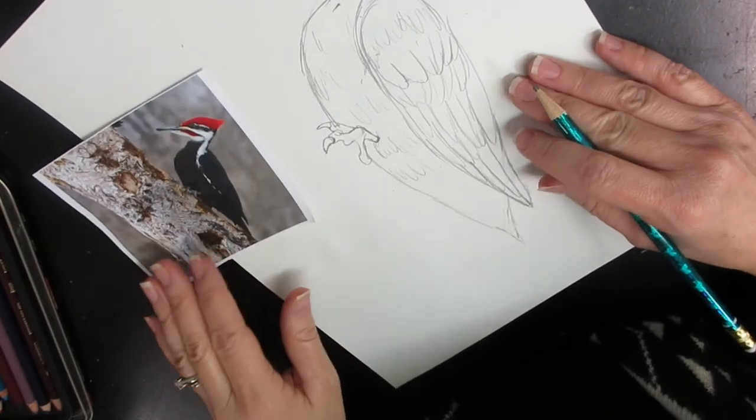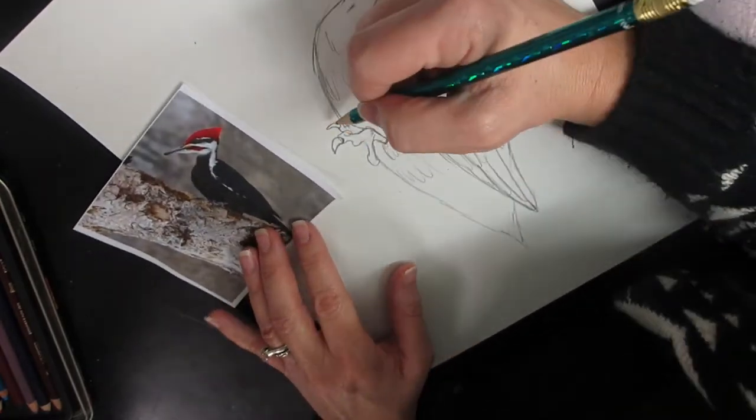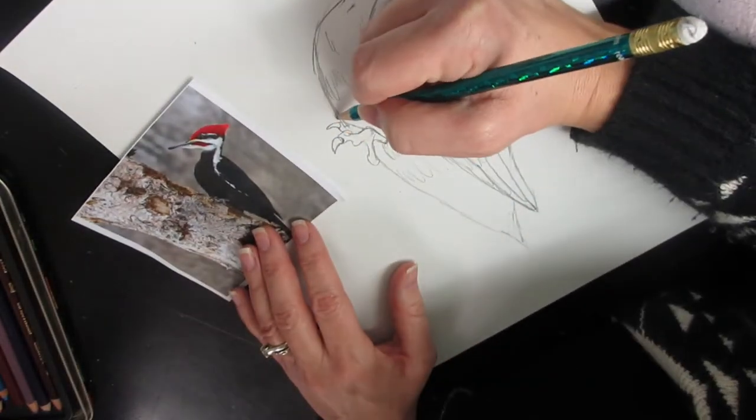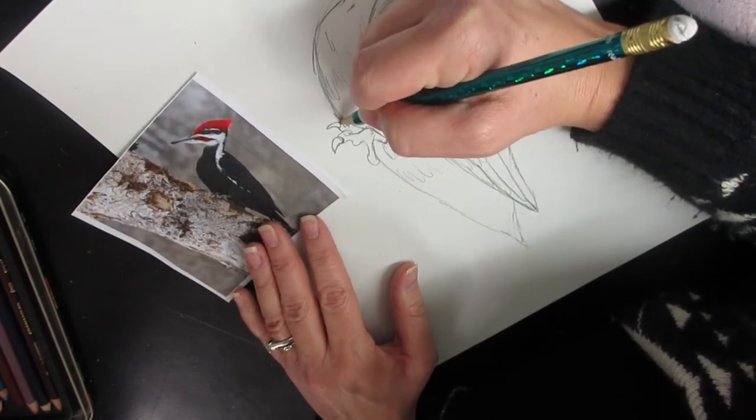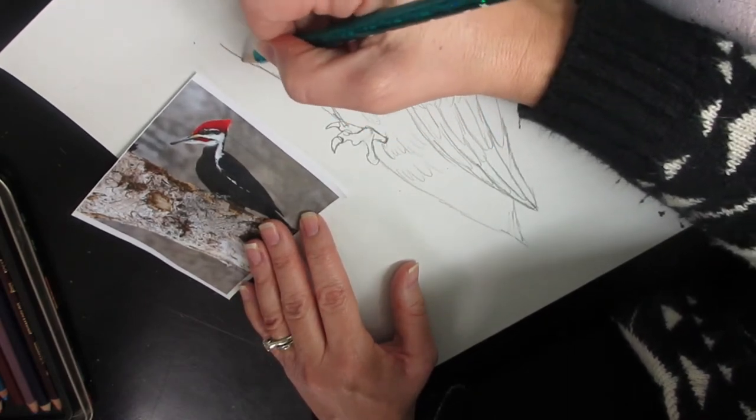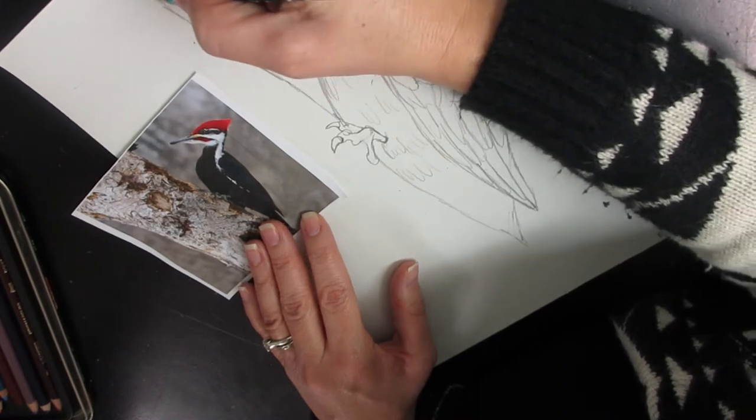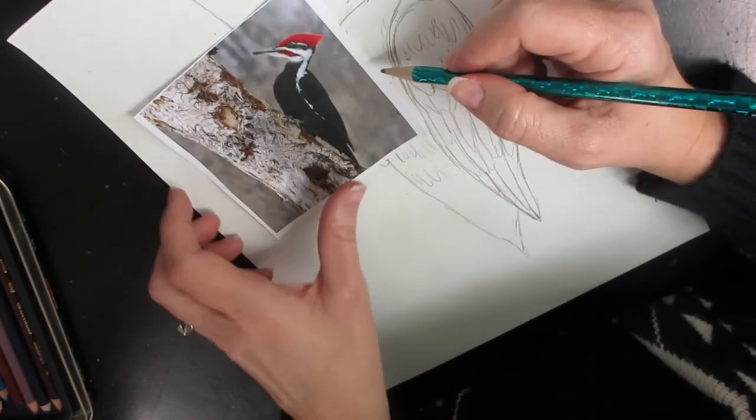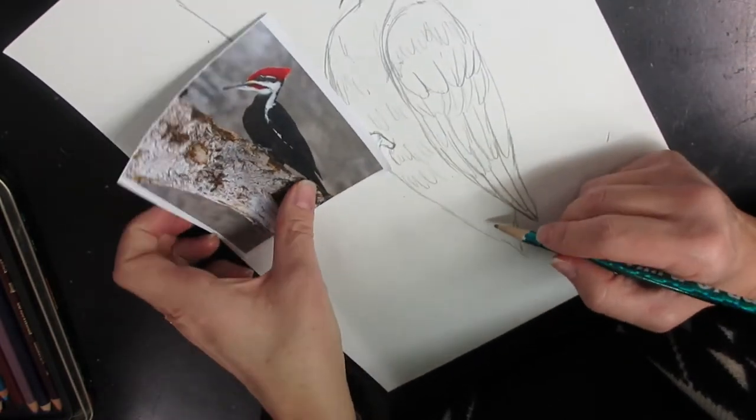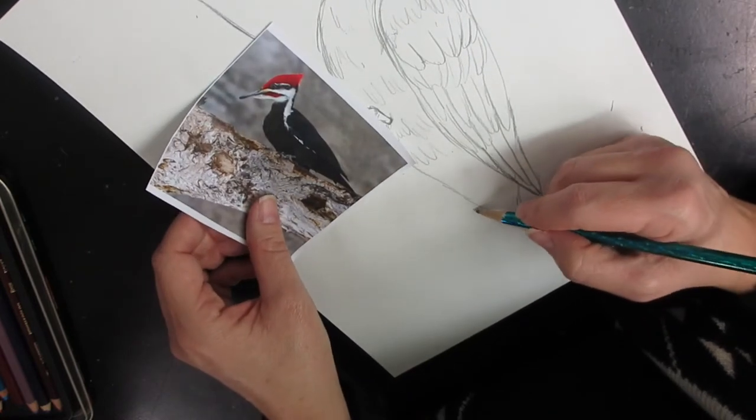The last thing I need to do is put in where the tree is. I can see that the tree touches the bird right about here. That's a pretty rough tree. It's been beaten up. A lot of woodpeckers on it.